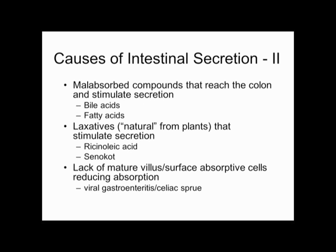Bile acids circulating from the liver to the ileum, if they reach the colon in large amounts, will cause secretion. Long-chain fatty acids from fat malabsorption can also cause colonic secretion. Some over-the-counter laxatives — like ricinoleic acid from the castor bean plant and Senecot — have both pro-motility and secretory effects. Diseases that destroy mature villus absorbing cells, leaving only crypt cells, produce mild secretory diarrhea. Viral gastroenteritis and celiac sprue can do this.